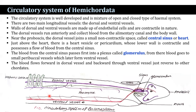The circulatory system is well developed and is a mixture of open and closed haemal types. There are two main longitudinal vessels: a dorsal vessel and a ventral vessel. The walls of the dorsal and ventral vessels are made up of endothelial cells and are contractile in nature.